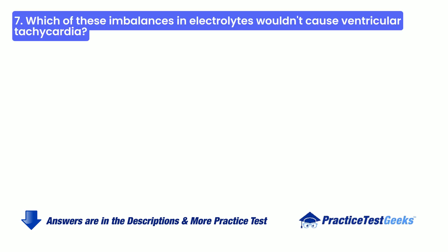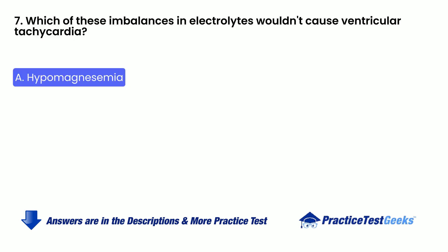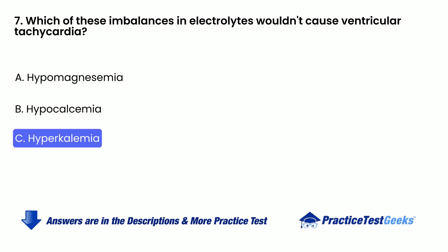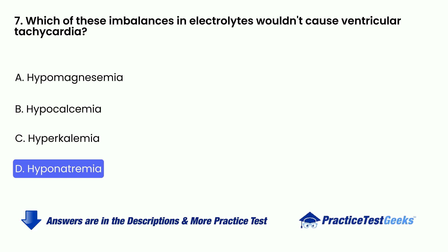Which of these imbalances in electrolytes would not cause ventricular tachycardia? A. Hypomagnesemia. B. Hypocalcemia. C. Hyperkalemia. D. Hyponatremia.